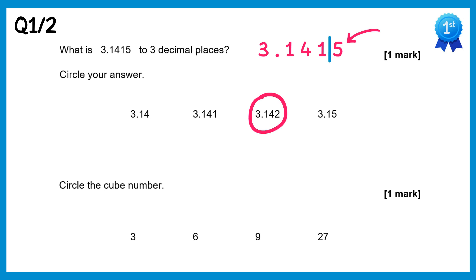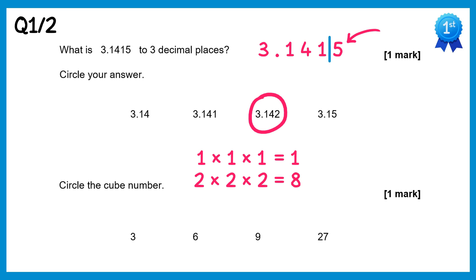For the next one we need to circle a cube number. To get a cube number you times a number by itself and then once more. So 1×1×1 is 1, 2×2×2 is 8, 3×3×3 is 27, and we can see that 27 is in the list, so that's the answer.